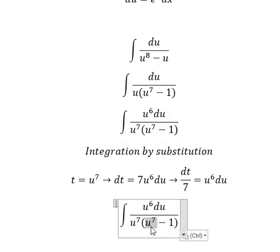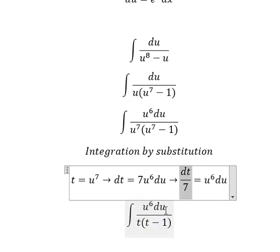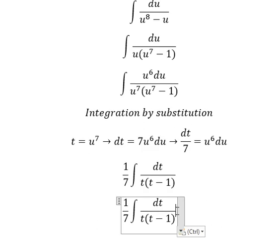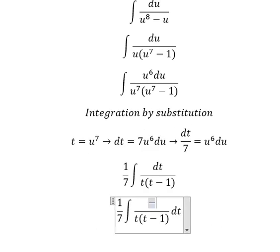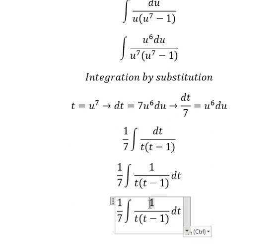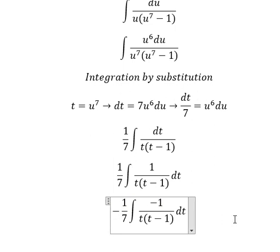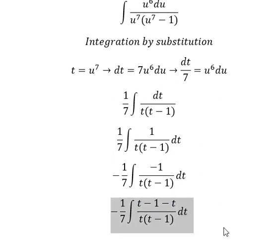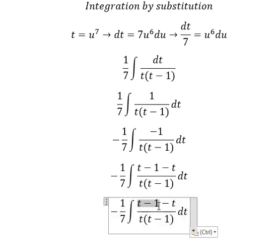This one we change for t, this one we change for t, and this one we change accordingly. I will put the negative on numerator and denominator, and bring this outside. We need to add t in here, and then subtract t.